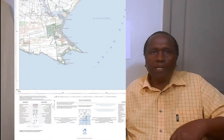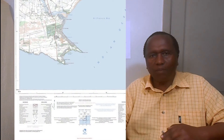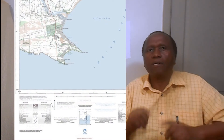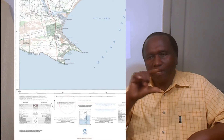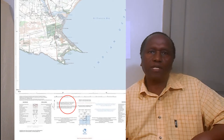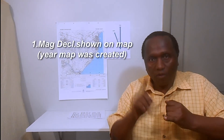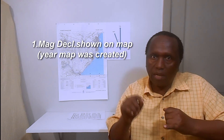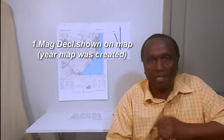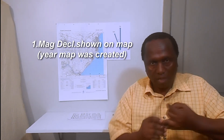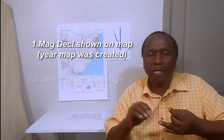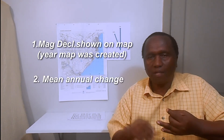Just go and check on your map — at the bottom where you see the sign of the magnetic declination, there will be information next to it. That information will tell you: one, the magnetic declination of the map in the particular year in which the map was created; and next, the mean annual change.